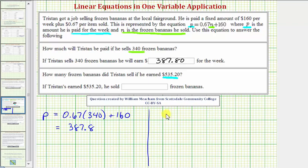This will give us the equation 535.2 = 0.67N + 160. To solve this equation for N, we want to isolate N on one side of the equation. To do this, we'll first isolate the N term on the right side. So to undo this addition, we'll subtract 160 on both sides of the equation.